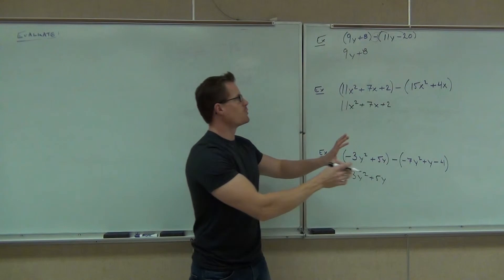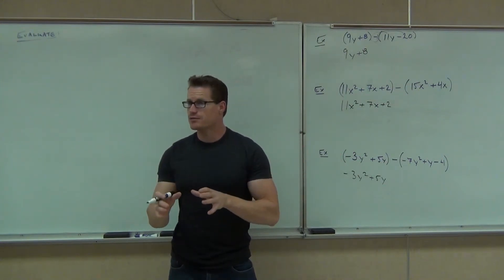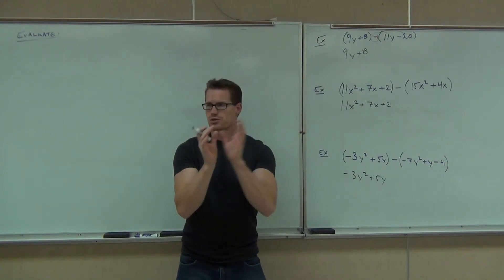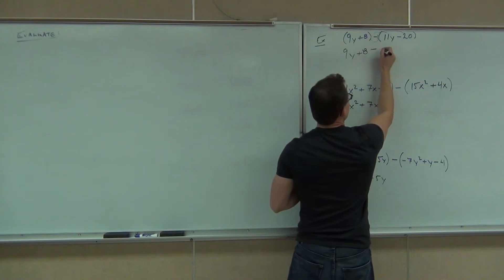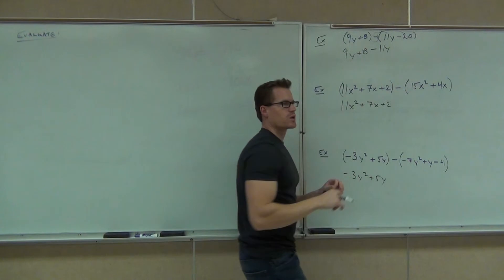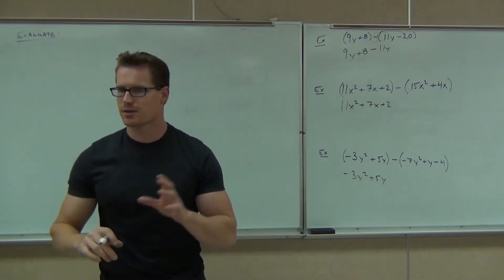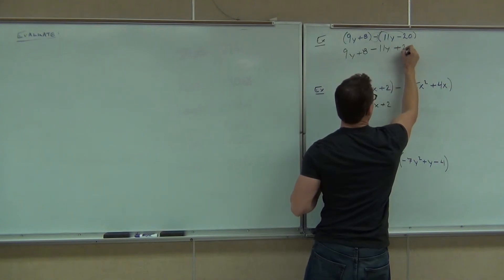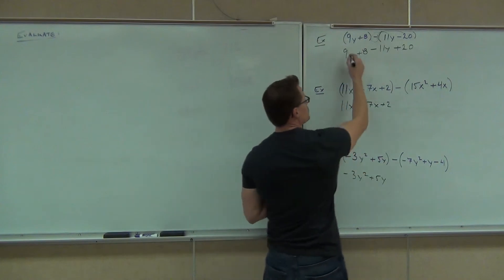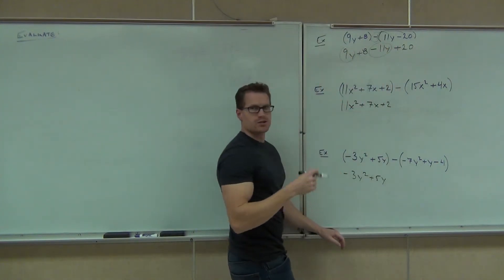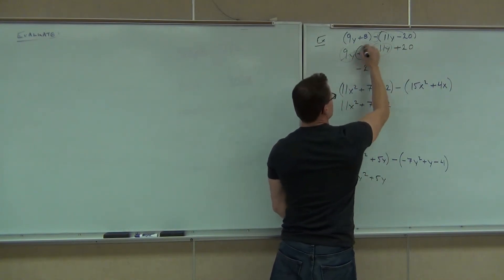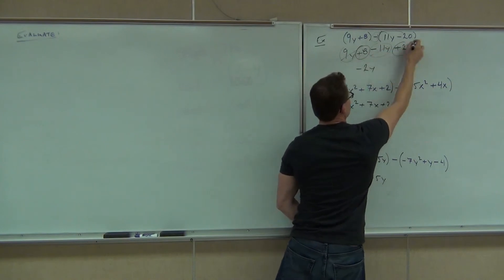So negative 1 times positive 11y is going to give you negative 11y. If you ever get a negative, you're going to write a minus — you could write it plus negative, and change that to a minus sign. So minus 11y, and then negative 1 times negative 20: a negative and a negative is a positive, so we write plus 20. After that, it's just combining like terms — identify those like terms, add or subtract their coefficients depending on the addition rule, and write it in order.